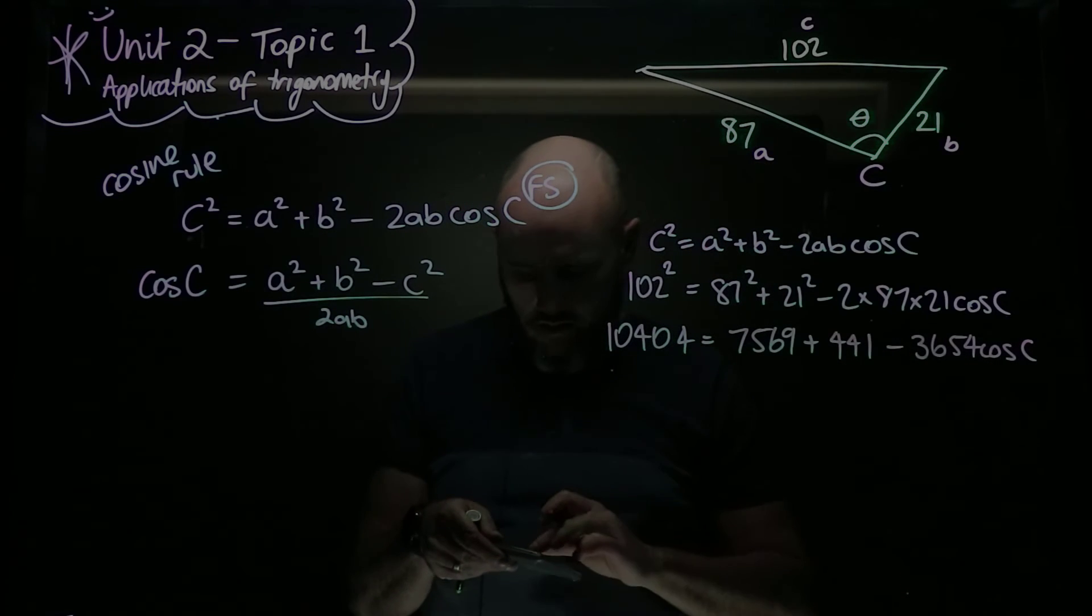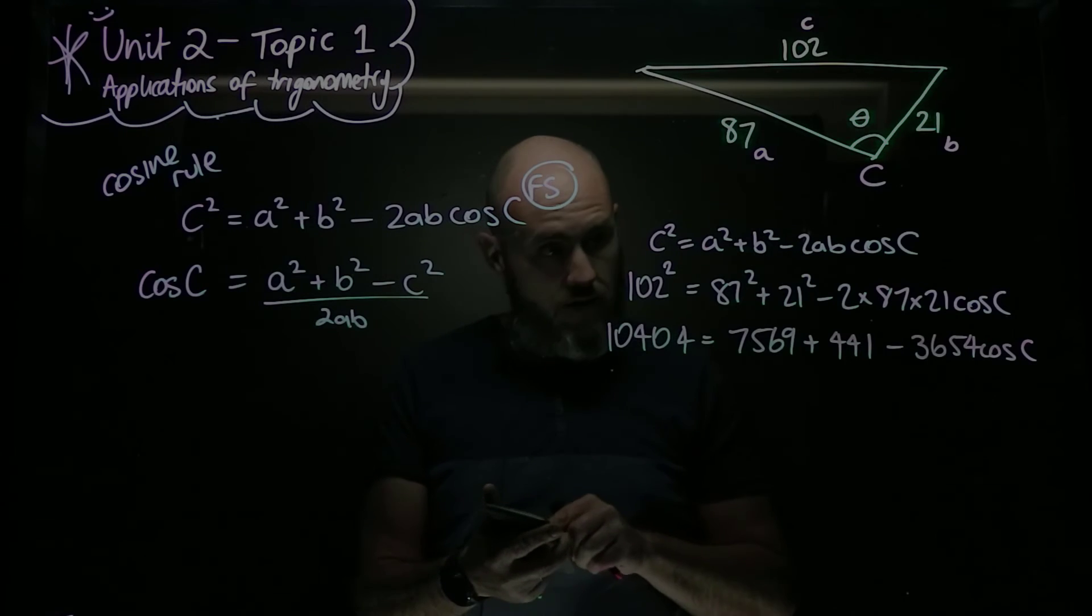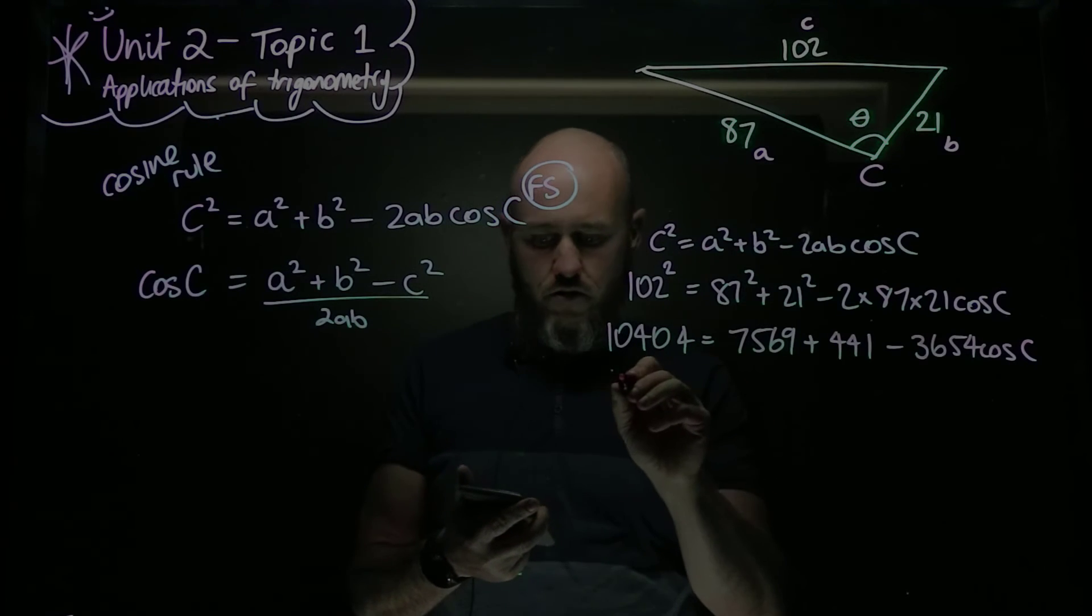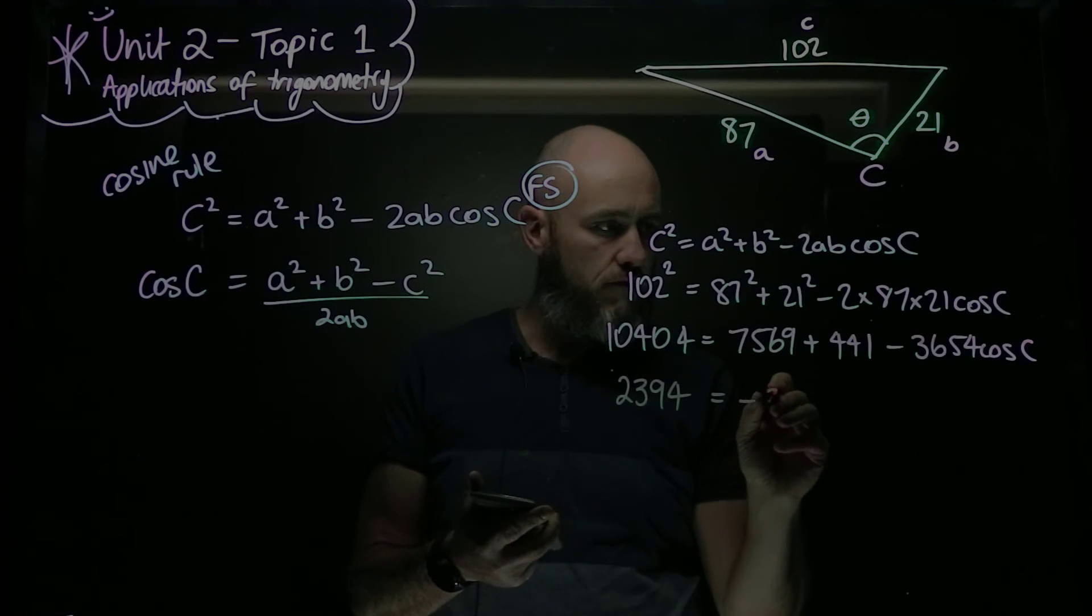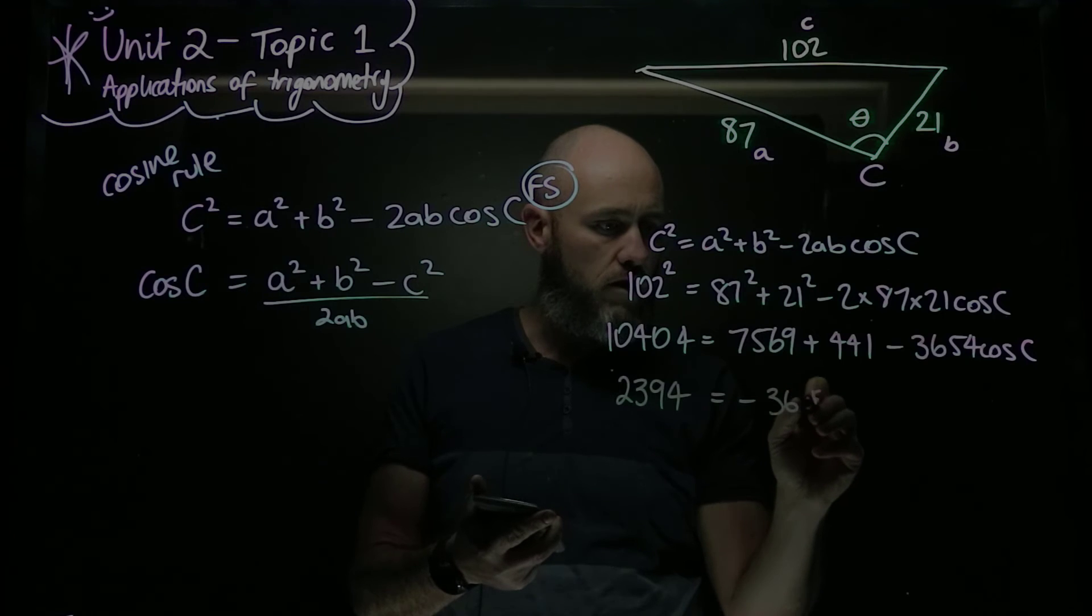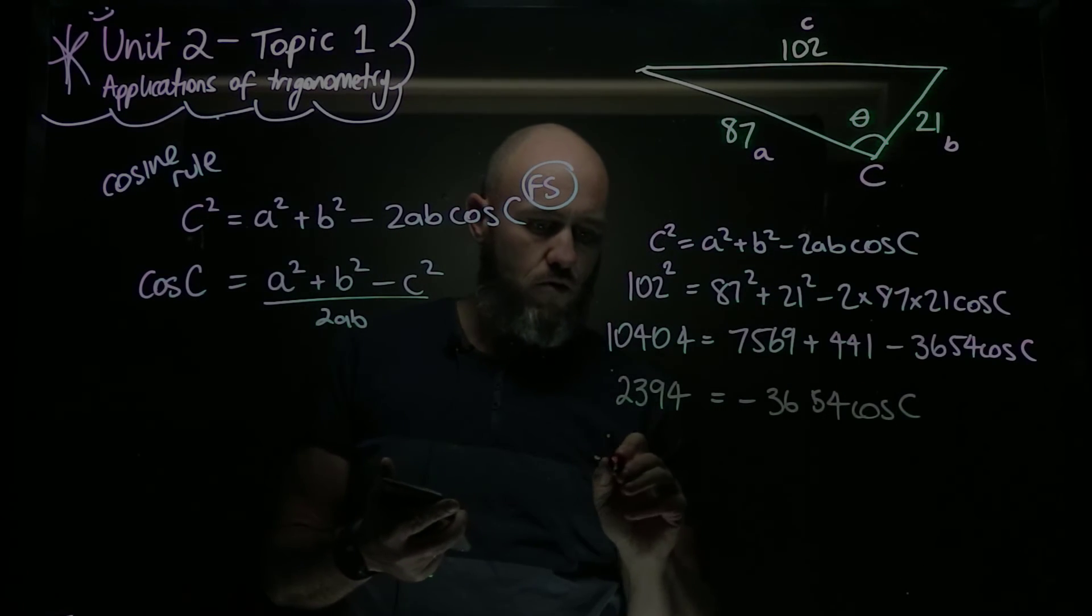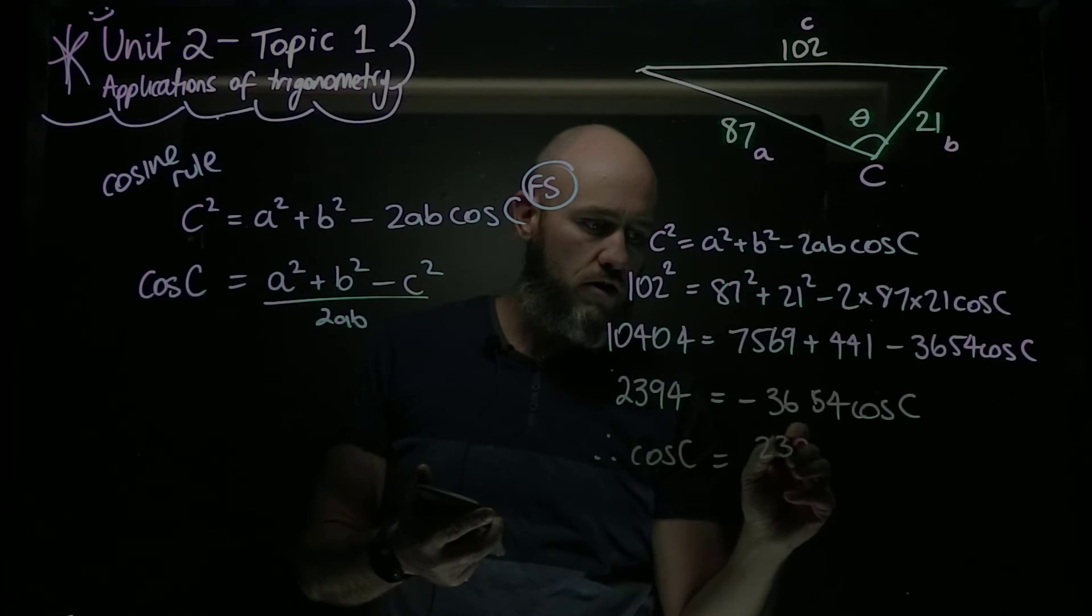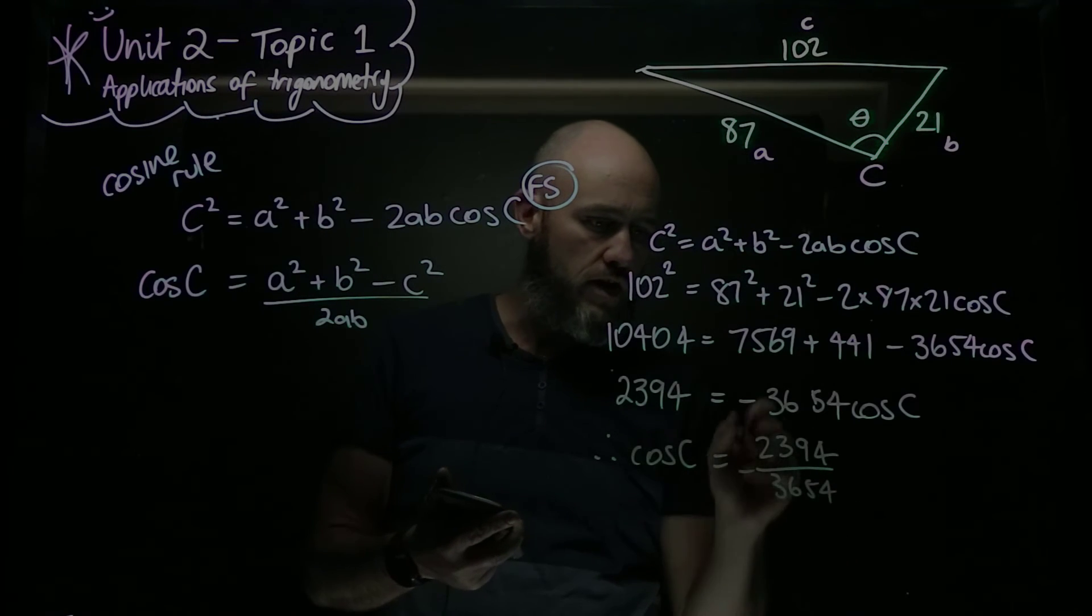Now I'm going to simplify this, and I get 10404 minus 7569 minus 441, which is equal to 2394, is equal to negative 3654 cos C. And therefore cos C is equal to 2394 over 3654, and it's negative because I've divided by that negative there.